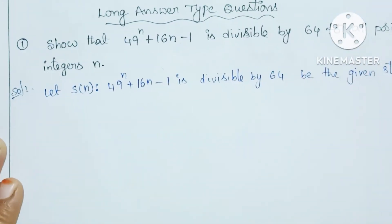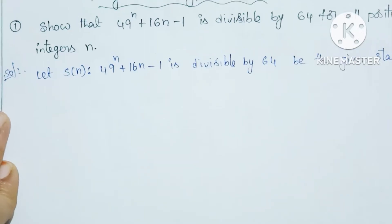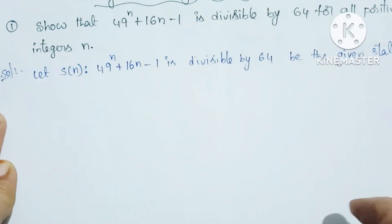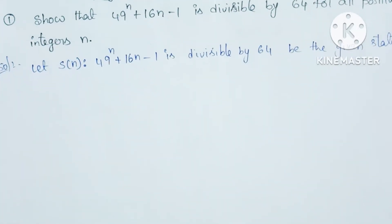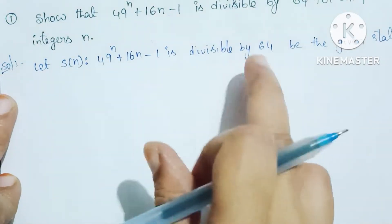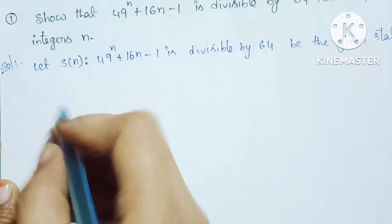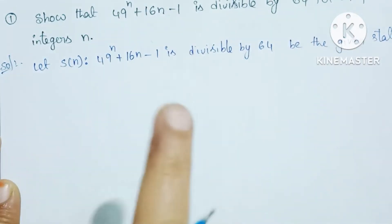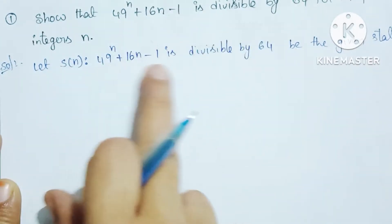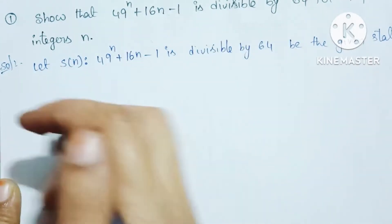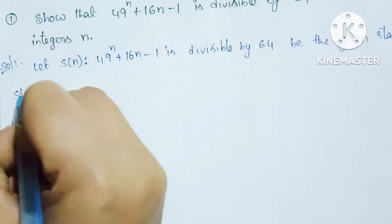With the given statement written and noted, we solve in three steps. First, write S of n and note it — you can mark it. Step 1: verify divisibility by 64 for the base case.